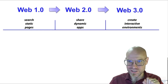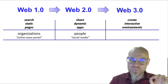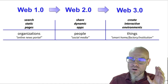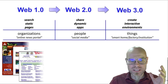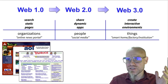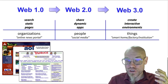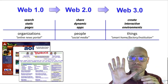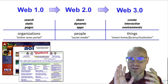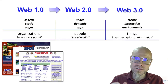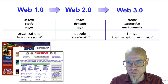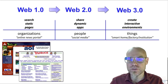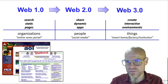Some other distinctions: web 1.0 was owned more by organizations. Think of it as basically a newspaper in digital format — universities had web pages like a bulletin board, just publishing what's going on. You could read the BBC online, and that would be it. It was a static page where organizations published digitally what they did before in analog — that's digitization.